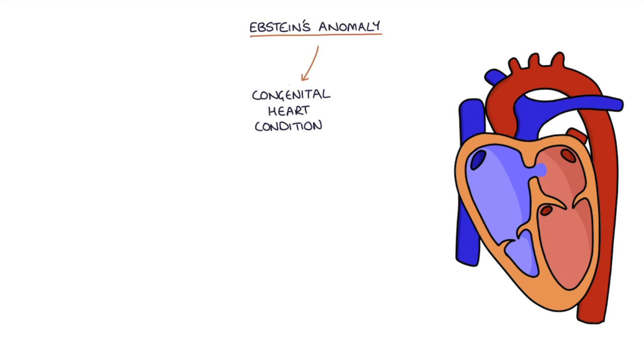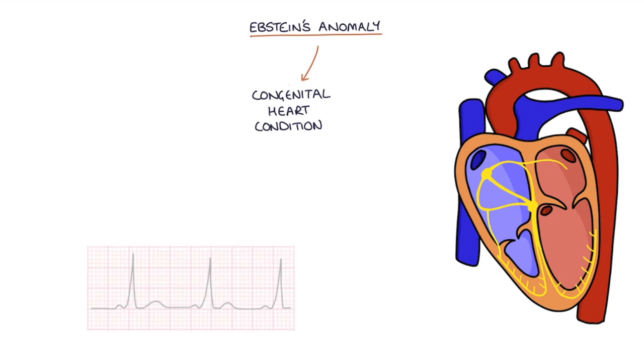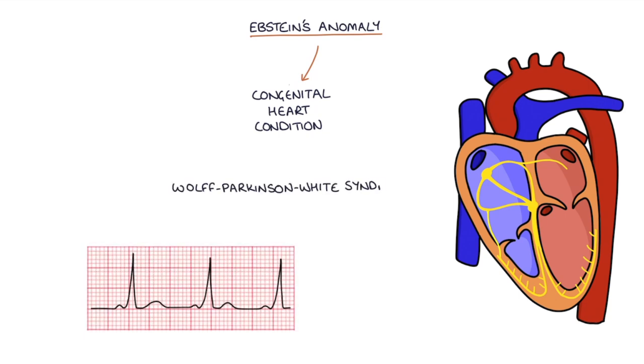It's often associated with a right to left shunt across the atria via an atrial septal defect. When this happens, blood bypasses the lungs and leads to cyanosis. Epstein's anomaly can also be associated with Wolff-Parkinson-White syndrome.